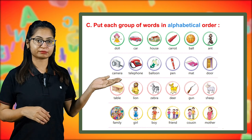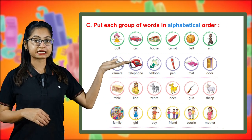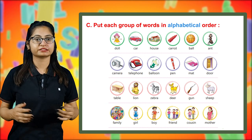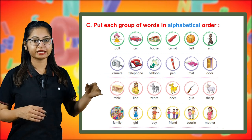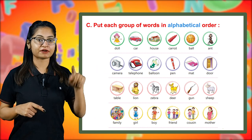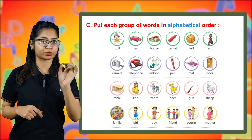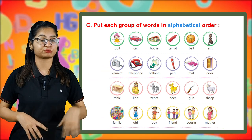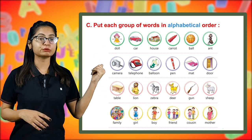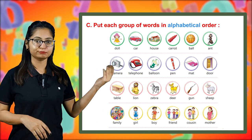The next group has family, girl, boy, friend, cousin, and mother. The answer would be: boy, cousin, then friend. Family would come before friend because after F, family has A and friend has R, and A comes before R. So the order is: boy, cousin, family, friend, girl, and then mother.